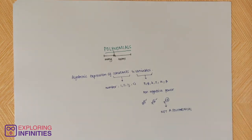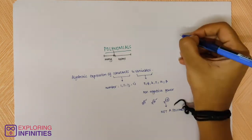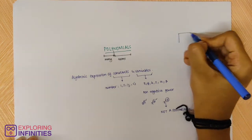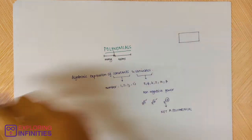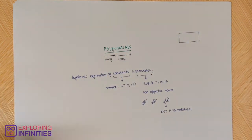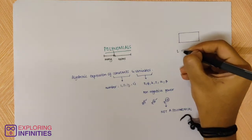That is the easiest way to put it. Let me show you an example of how a polynomial is constructed. Let's take a rectangle. A question can be that the length of a rectangle is 1 more than twice its breadth.